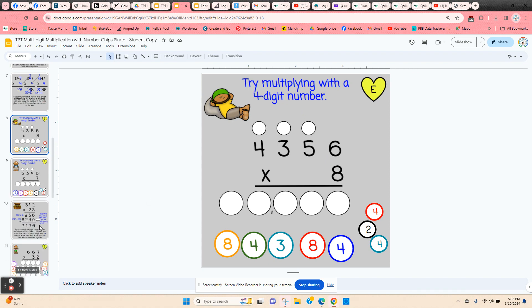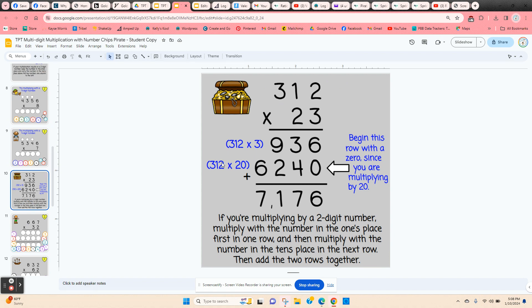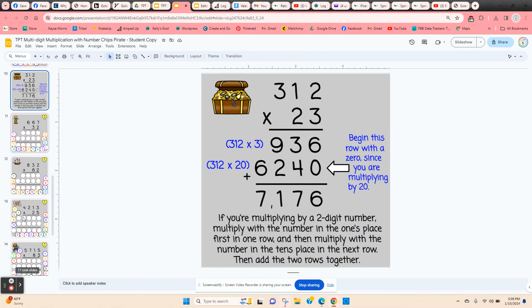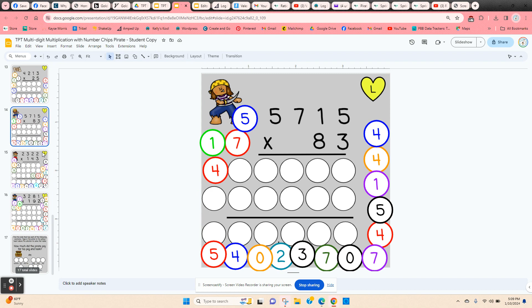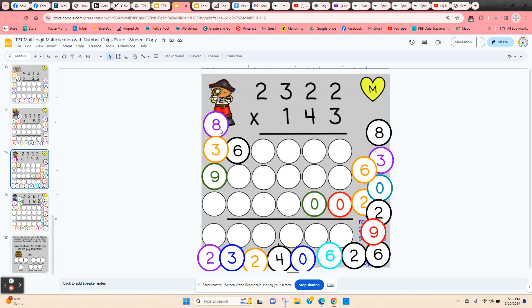Now when they multiply by a two-digit number—for example, three digit times two digit—they're going to have a second row. So they're breaking up their multiplication into 3 times 312 and then 20 times 312. And because they're multiplying by 20, they have to start this row with a zero. Students are going to be doing these on the next few slides.